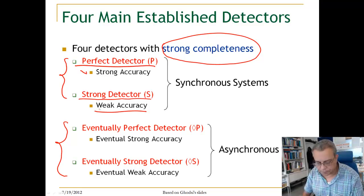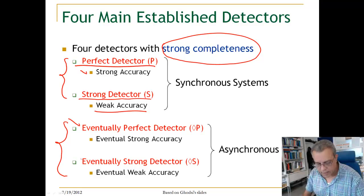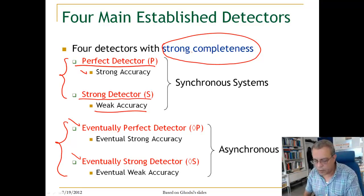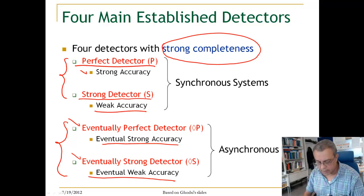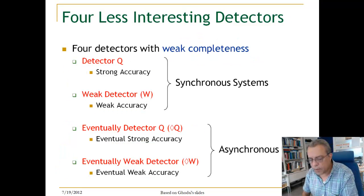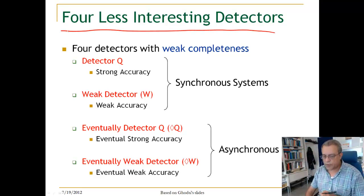For eventually synchronous systems, we have the eventually perfect detector, diamond P, and the eventually strong detector, diamond S. Diamond P has strong completeness with eventually strong accuracy, and diamond S has strong completeness with eventually weak accuracy.